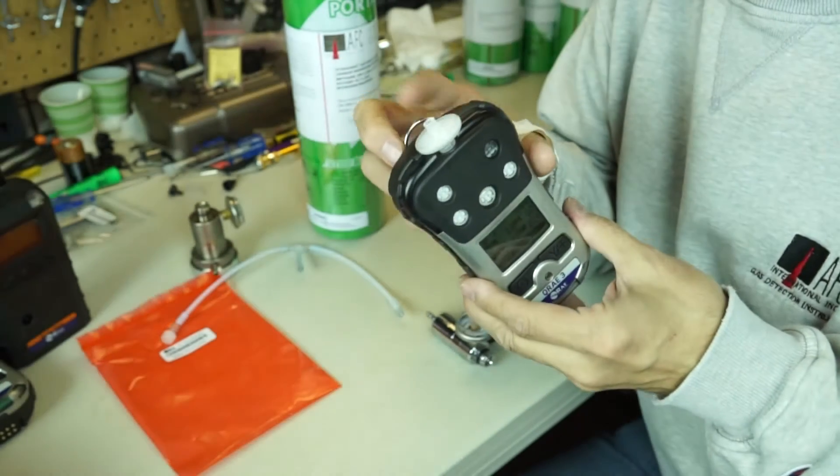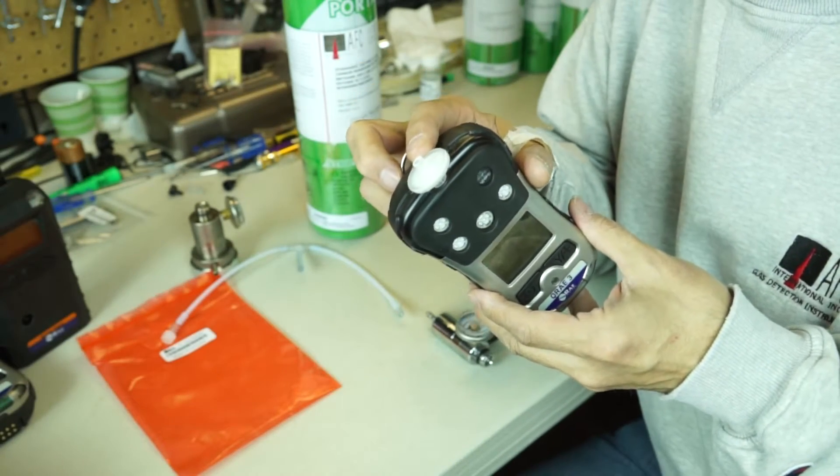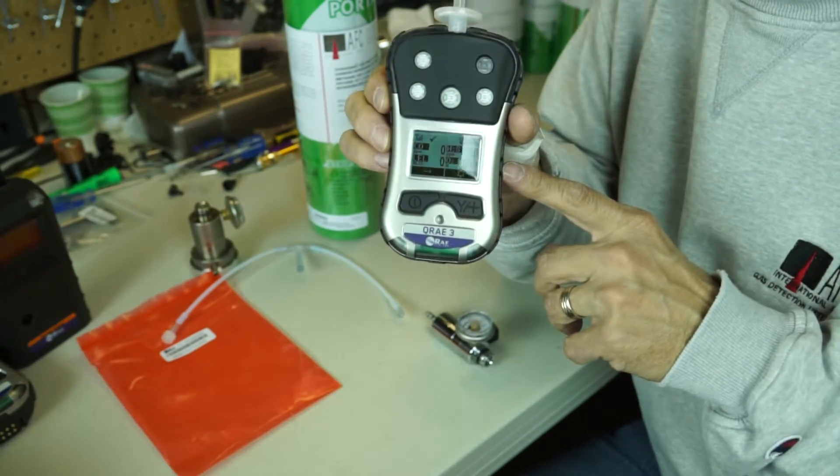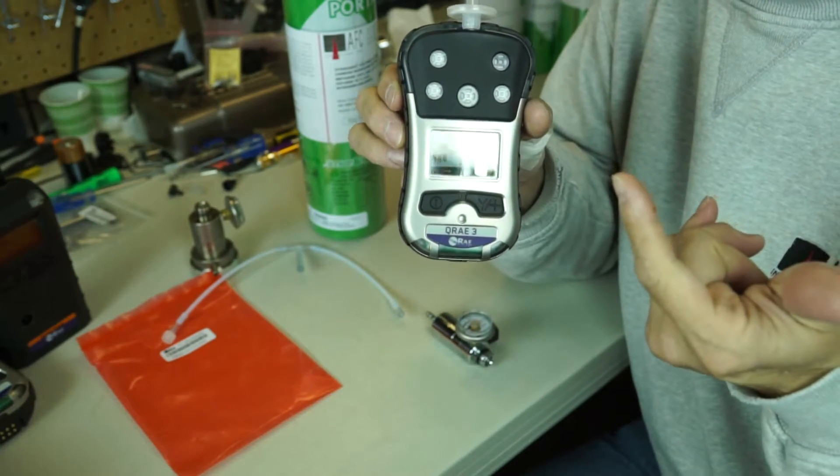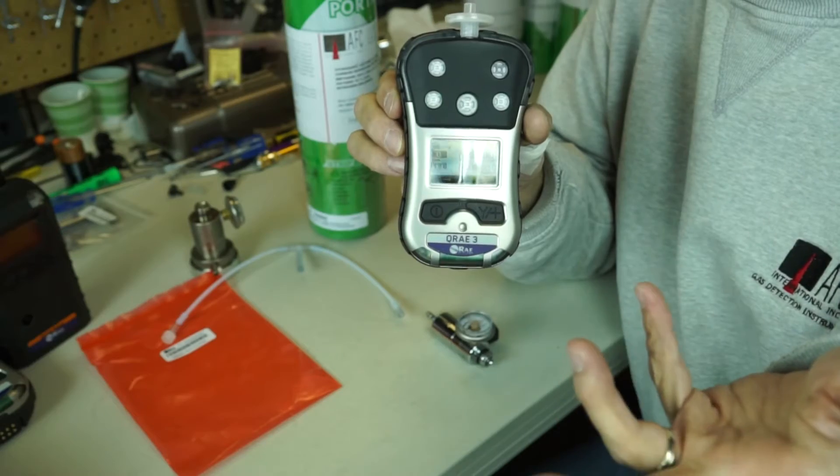So Q-Ray 3 has the filter and the pump inlet right at the top of the unit. This happens to be a four gas instrument: LEL, oxygen, carbon monoxide, and H2S.